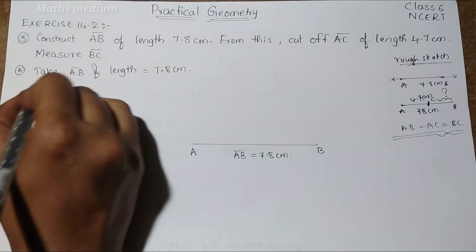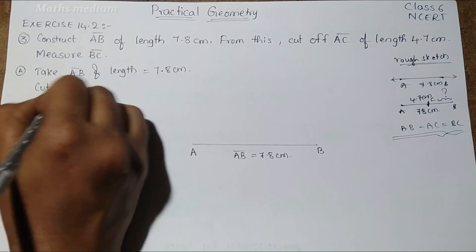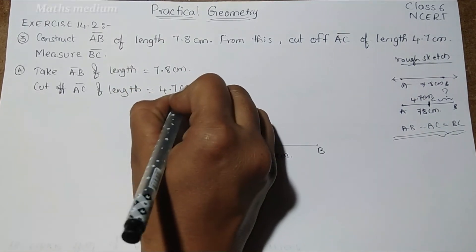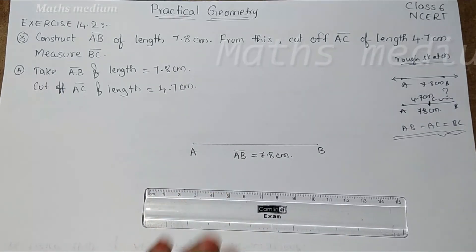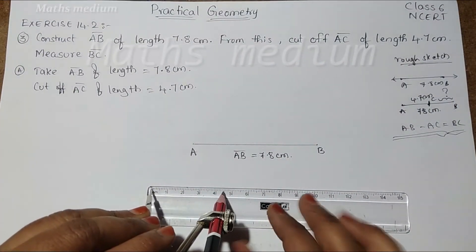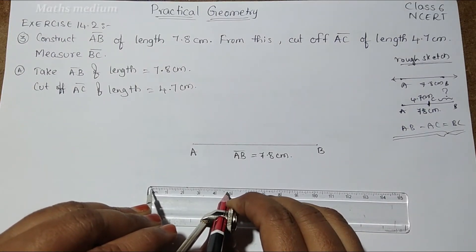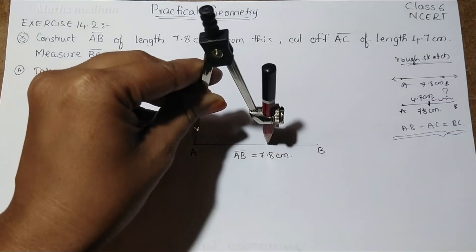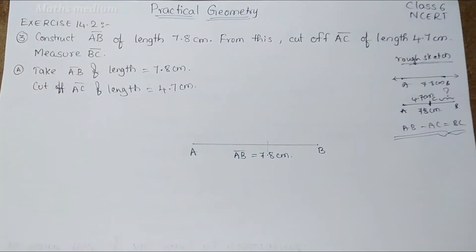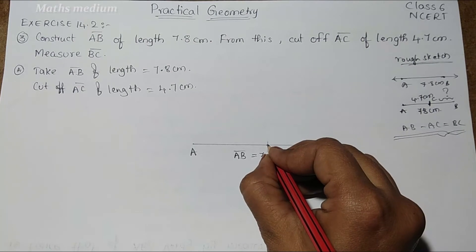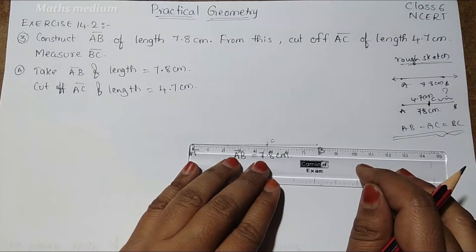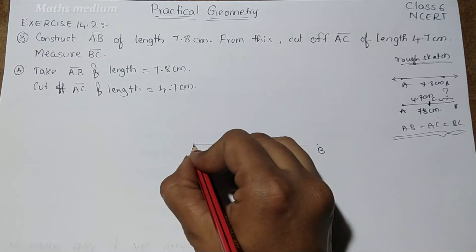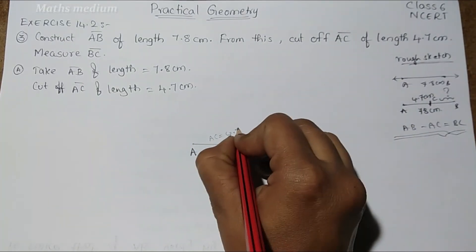From this, cut off AC bar of length 4.7 cm. Take the scale and compass with 4.7 cm. This is 0, this is 4.5, 4.6, 4.7. Without any disturbance, take the compass and make an arc with 4.7 cm. This is point C. If you want to check, this is 0 and this is 4.7. AC is equal to 4.7 cm.